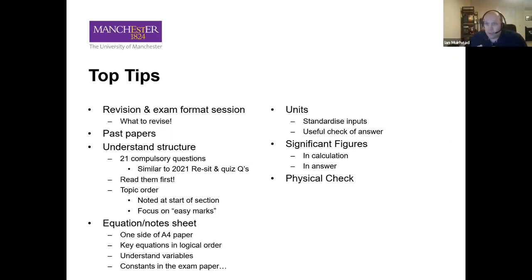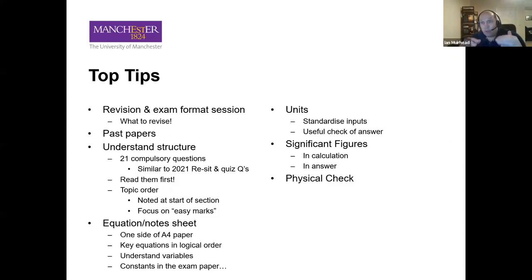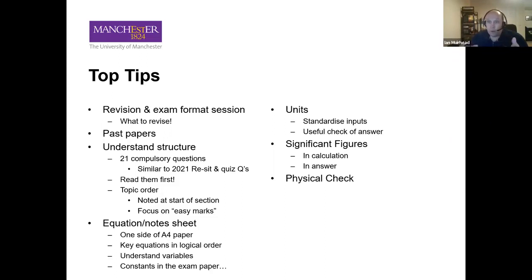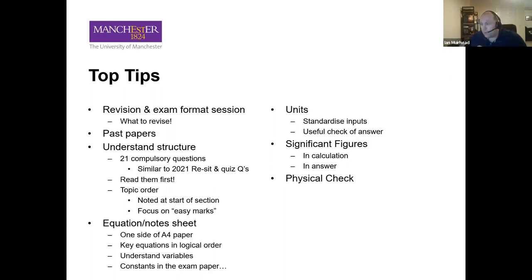As you've been told repeatedly, you're allowed one side of A4 paper. I would put key equations on that in a logical order — by topic — so that if I'm dealing with something in the fifth topic, I'd know exactly where those equations are. If you understand what the variables are within an equation, you'll normally be given some variables in the question. You can write them down, say 'I've got a, b, and c, and an equation with a, b, c, and d — I need to find d,' and it helps you work it out.